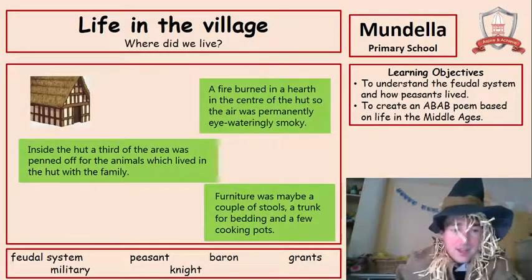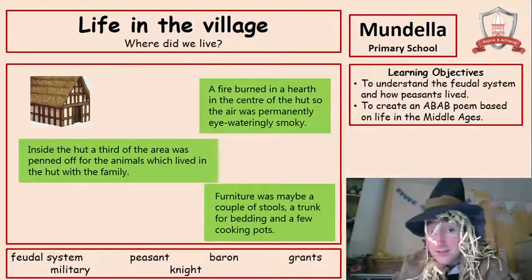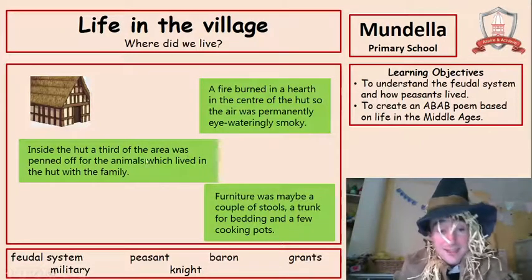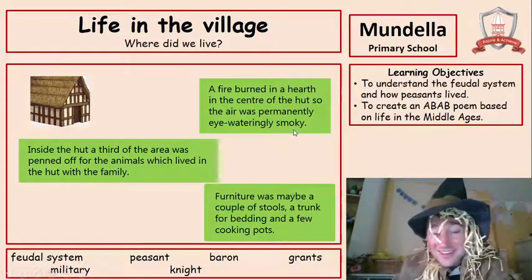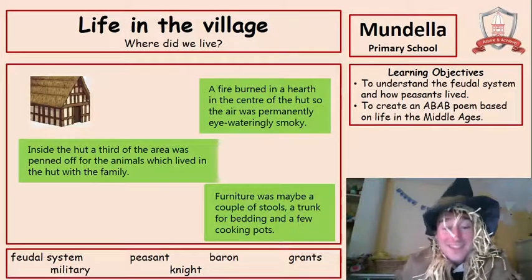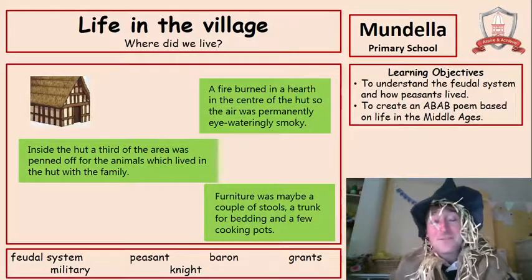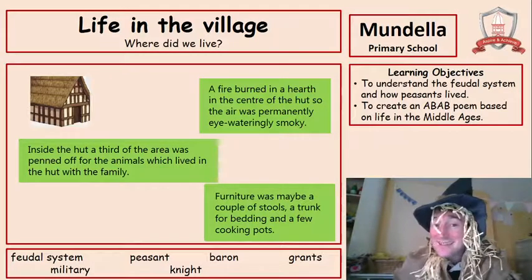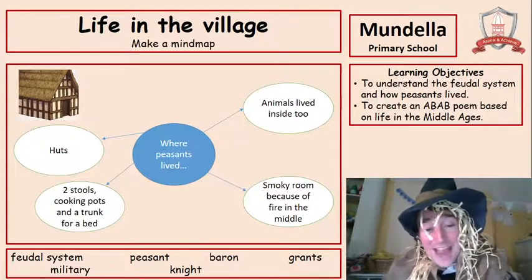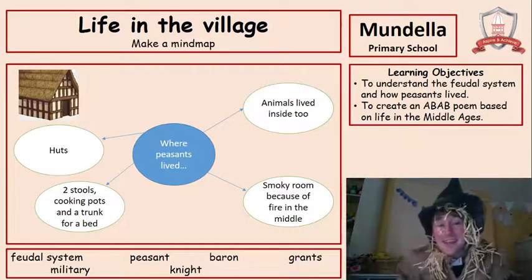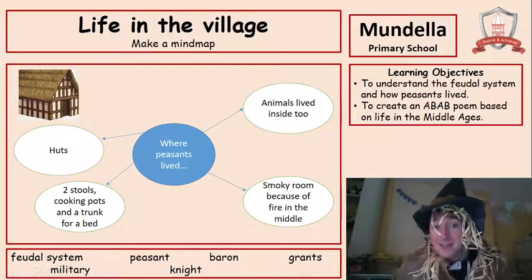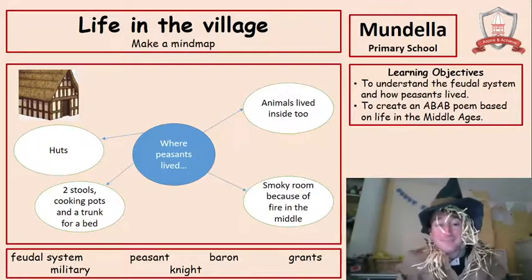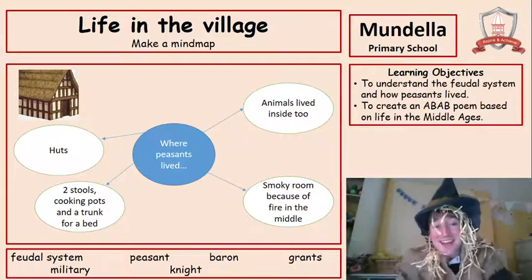So where did we live? Well, there's a picture of my house — though we didn't call it a house, it was called a hut. Inside the hut, a third of the area was penned off for animals, which actually lived in there with us. A fire burned right in the centre of the hut, and the air was permanently eye-wateringly smoky. The furniture was just a couple of stools, a trunk for bedding, and a few cooking pots — that's all we needed to survive in the village. Now what you need to do is make a mind map about what it's like to live in the village — the huts, the cooking pots, the animals. Copy it down and add your own ideas, then pause the video and continue when you're ready.